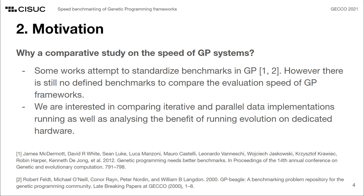Moreover, achieving commensurable results between frameworks with different features is often infeasible. For this reason, the current body of work focused on comparing genetic programming systems is scarce. In this work, we try to overcome this trend by tackling some of the standardization challenges involved, while also comparing several genetic programming approaches.